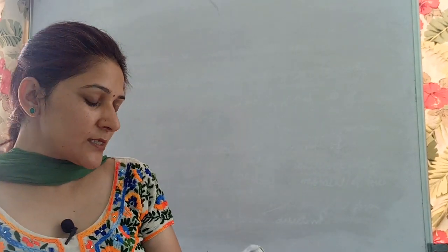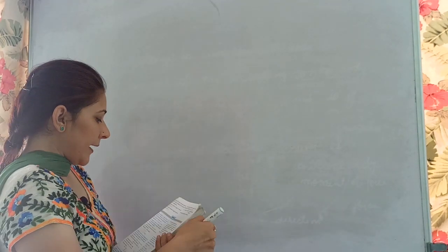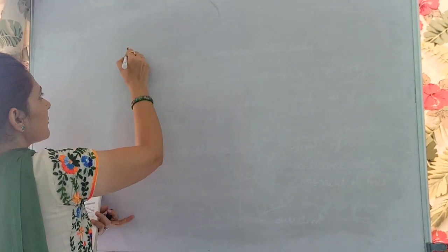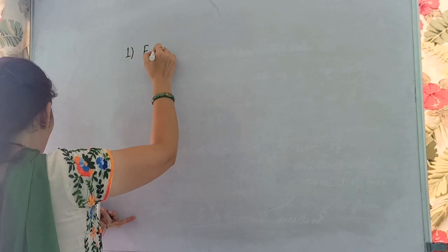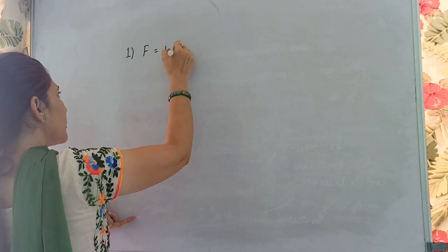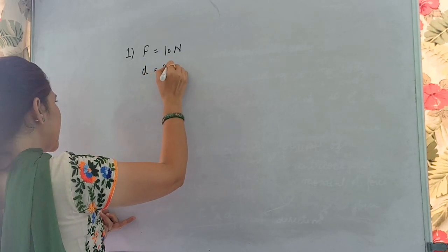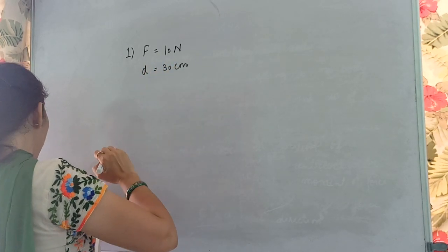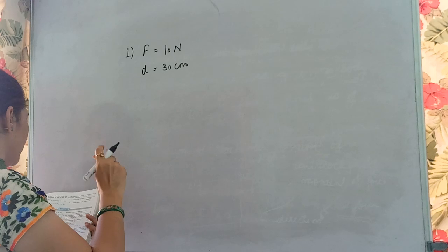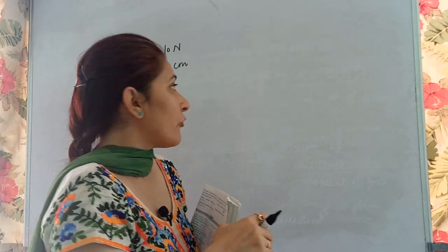Hello students, today we will discuss the examples of Exercise 1a, starting with the first example. A body is pivoted at a point; a force of 10 newtons is applied at a distance of 30 centimeters from the pivot. Calculate the moment of force about the pivot.